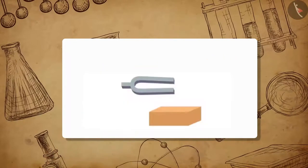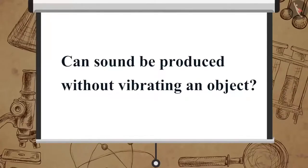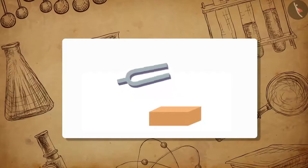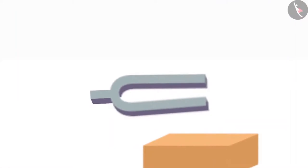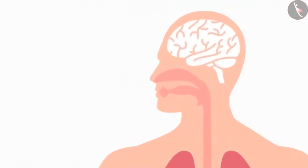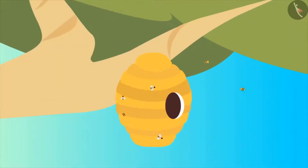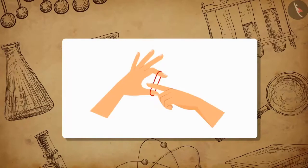In the previous examples we produced sound by setting the object on vibration. Can sound be produced without vibrating an object? Vibration sets an object in a rapid to-and-fro motion. Vibration of the vocal chords produces the human voice. Have you heard the buzzing of bees? How do you think the buzzing noise is produced?